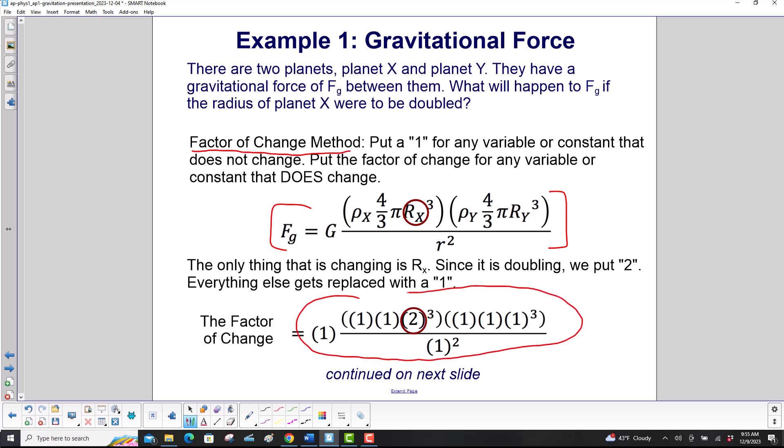So we label constants 1 and also any variables that are not changing. And the only thing that's changing is R_X. We've doubled it, so there's a 2 there.